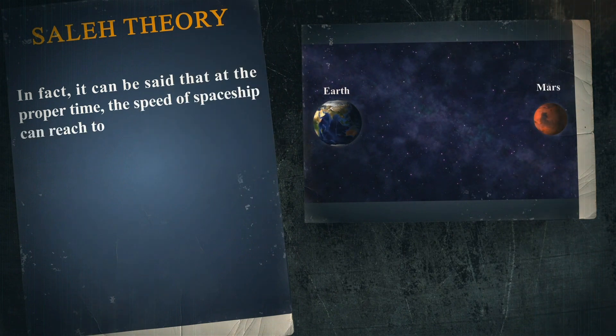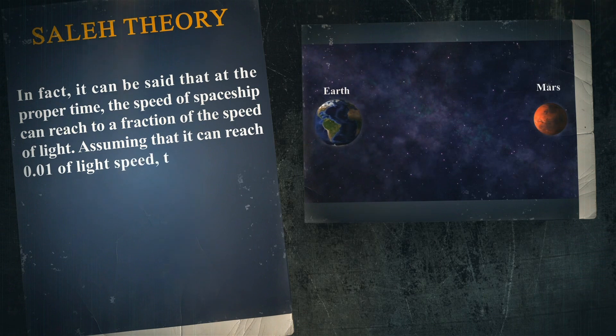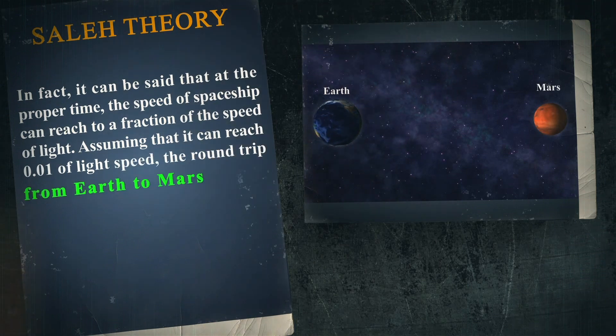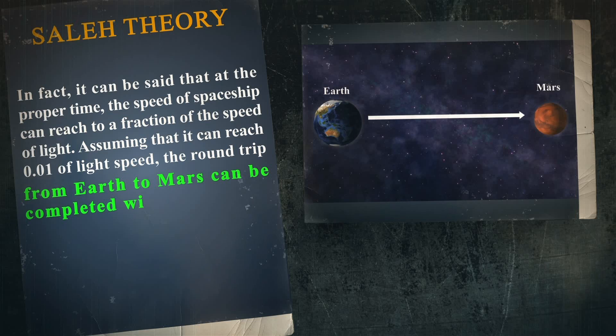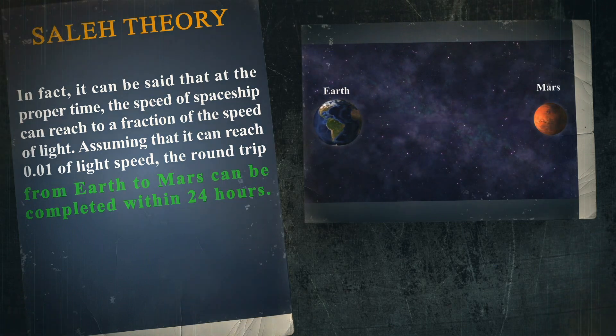In fact, it can be said that at the proper time, the speed of a spaceship can reach to a fraction of the speed of light. Assuming that it can reach 0.01 of light speed, the round trip from Earth to Mars can be completed within 24 hours.